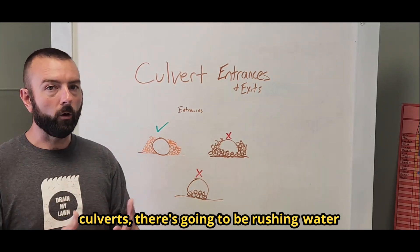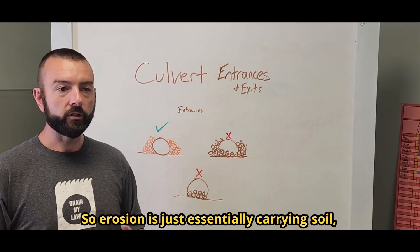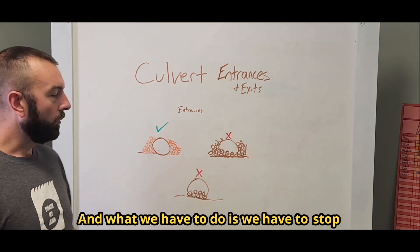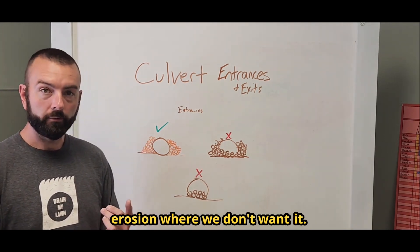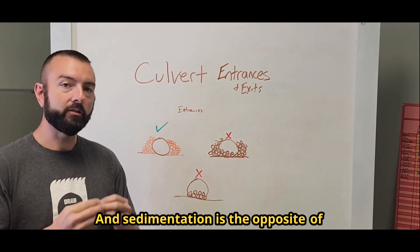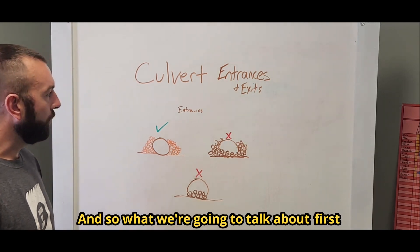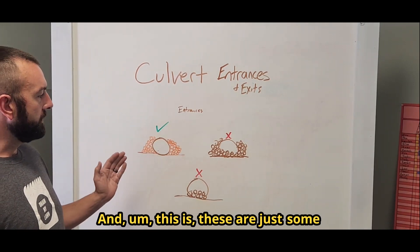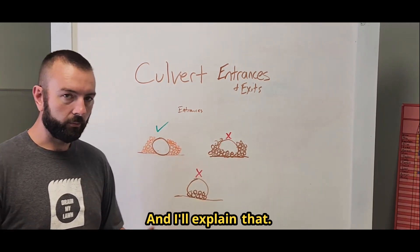But most of the time when we're doing culverts, there's going to be rushing water onto a property and it has the potential to erode. Erosion is essentially carrying soil, moving soil away from where you want it. We have to stop erosion where we don't want it, and we also have to stop sedimentation where we don't want it. Sedimentation is the opposite of erosion, depositing sediment where we don't want it. So what we're going to talk about first is entrances.